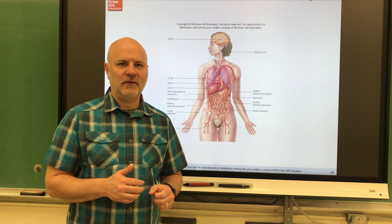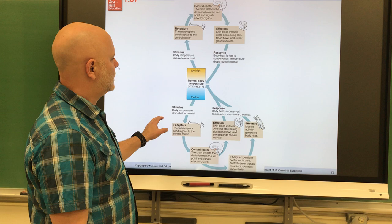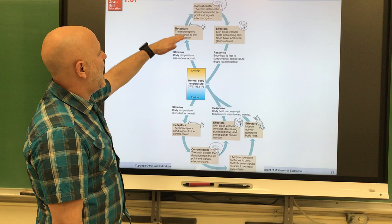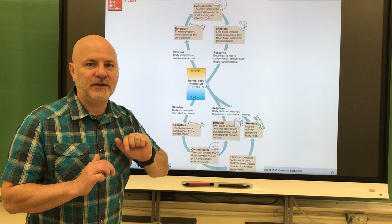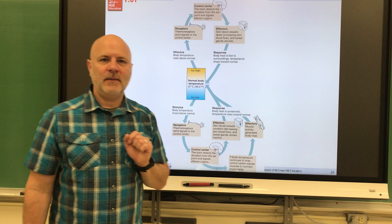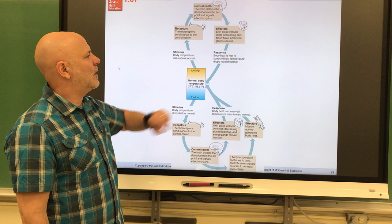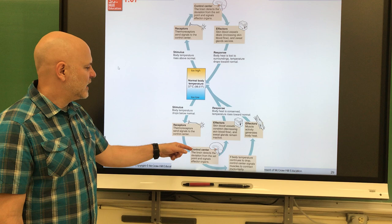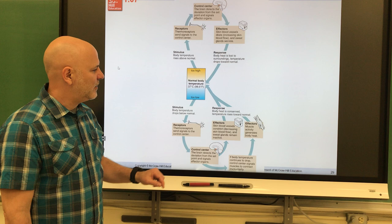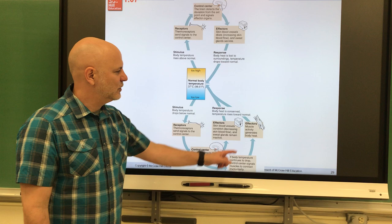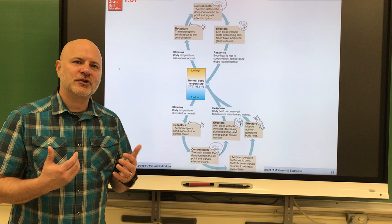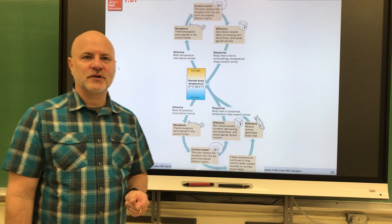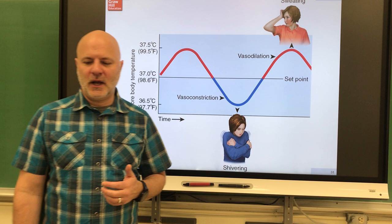For example, if we get too hot, thermal receptors in our skin send a signal to the hypothalamus in the brain, which then signals the sweat glands — the effectors — to produce sweat, lowering body temperature back to normal. If we get too cold, thermoreceptors again signal the hypothalamus, which sends signals to skeletal muscles causing them to contract and shiver. That shivering process generates heat, increasing body temperature back to normal.